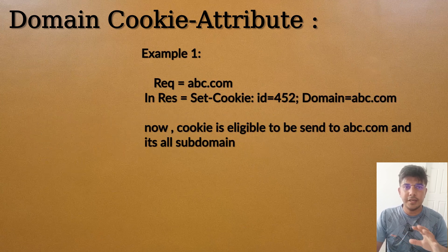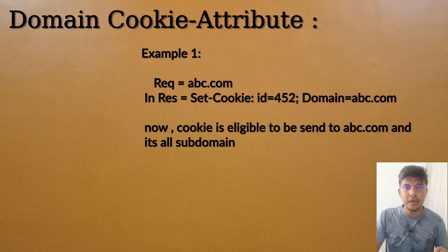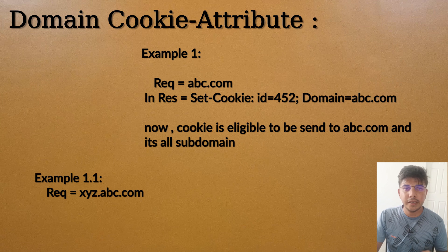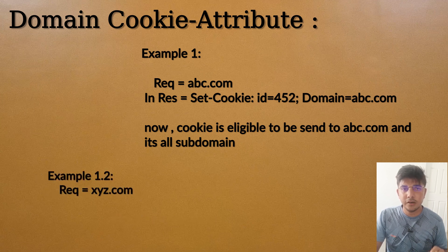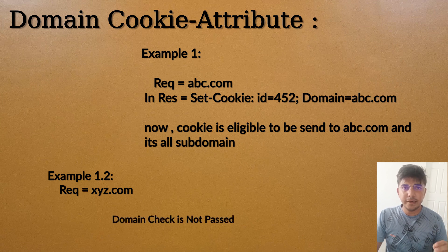In the first example, our request is sent to abc.com and in the response the server sets the cookie with the domain attribute value as abc.com. If a subsequent request is sent to xyz.abc.com, the domain check passes because xyz.abc.com is a subdomain of abc.com. If the request is sent to xyz.com, it is not a subdomain of abc.com, so the domain check fails and the cookie is not attached to the request.